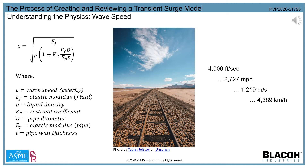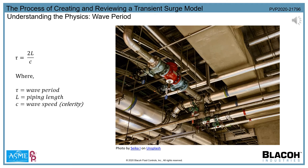Surge waves travel through liquid piping systems in the same manner. The speed at which they travel is the speed of sound, which is mostly dependent on how elastic the fluid and piping system is. The more rigid the system is, the faster the pressure wave will travel. In a typical steel piping system carrying a liquid close in nature to water, the wave speed can easily exceed 4000 feet per second. Wave period is the time it takes a pressure wave to travel out and bounce back. Assuming a 4000 feet per second wave speed, the pressure wave will take 0.02 seconds to travel out and bounce back.